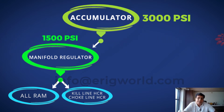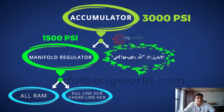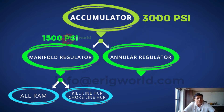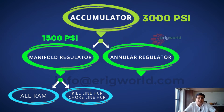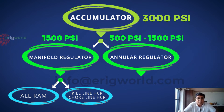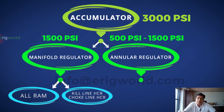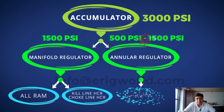The accumulator also gives pressure to the annular. For the annular there is no fixed pressure, because the operating pressure depends on the operations we do. The range of that pressure is from 500 to 1500 psi depending on operations, and it gives pressure only to the annular BOP.